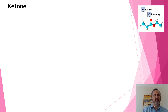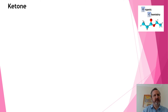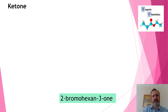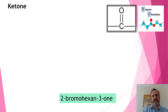A ketone is in many ways similar to an aldehyde. It also has a double bond oxygen, but it's not at the end of a molecule. Anytime we have a carbon with a double bond oxygen in between two carbons, we have a ketone group.